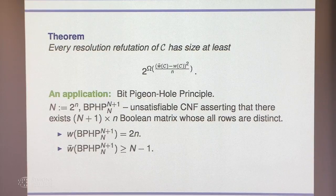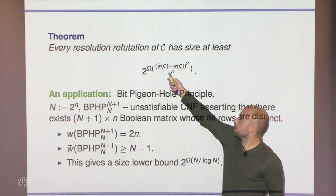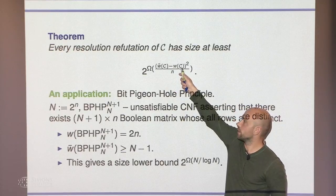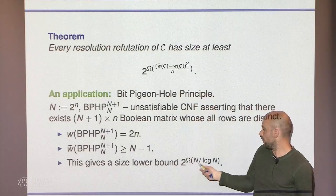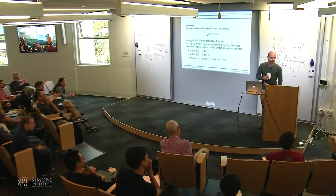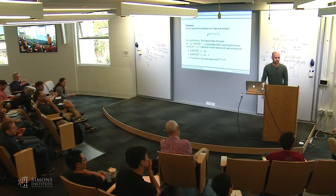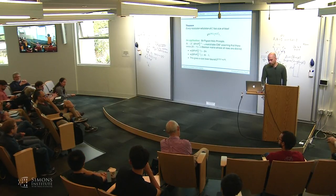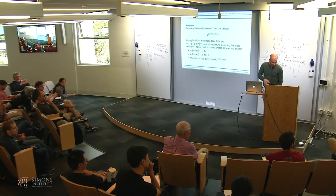Plugging into the formula: capital N is the number of rows (exponential in n), small n is log of capital N, and the total number of variables is capital N times n. This gives an exponential lower bound on the size of any resolution refutation of the bit pigeonhole principle. We'll take a break now and start again at 11.